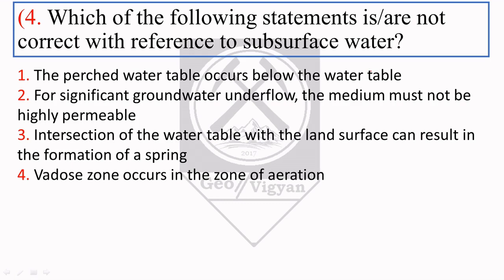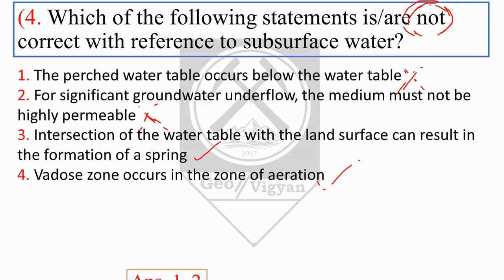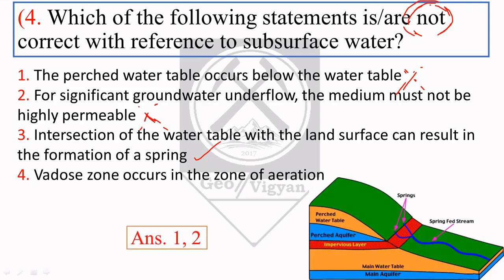The next question: which statements are NOT correct with reference to subsurface water? Option 1 — perched water table occurs below the water table: this is wrong, because a perched water table occurs above the main water table. Option 2 — for significant groundwater underflow the medium must not be highly permeable: this is also wrong, because the medium should be permeable. Option 3 — intersection of the water table with the land surface can result in spring formation: this is right. Option 4 — vadose zone occurs in the zone of aeration: this is right. So options 1 and 2 are not correct.